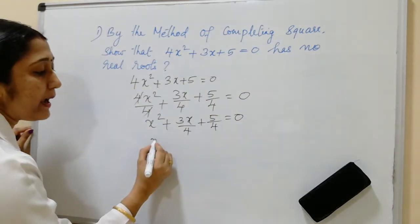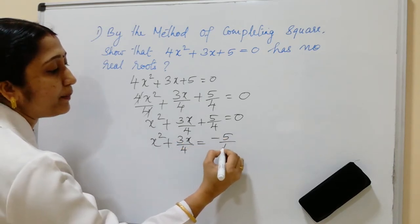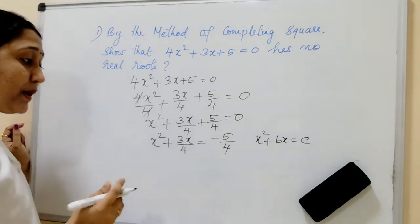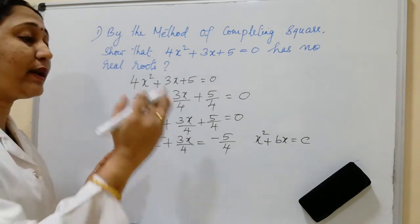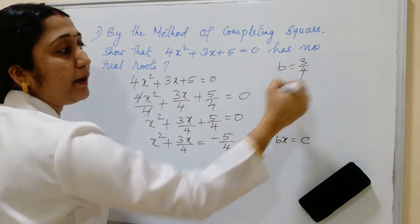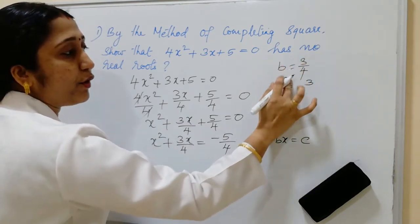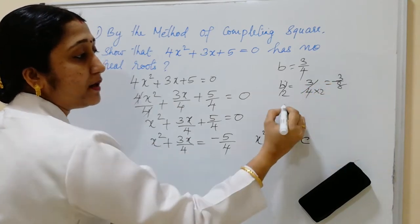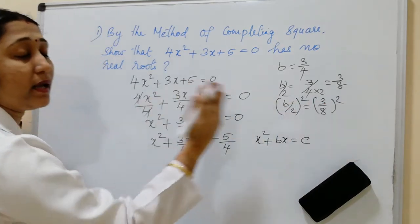Next, we write it in the form x² + bx = c, so x² + 3x/4 = −5/4. The next step is to add (b/2)² to both sides. Here b = 3/4, so b/2 = 3/4 ÷ 2 = 3/8. Therefore (b/2)² = (3/8)², which we add to both sides of the equation.